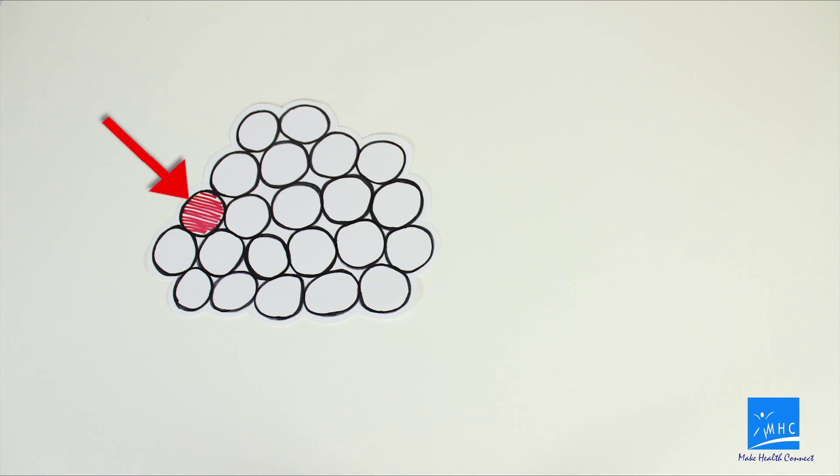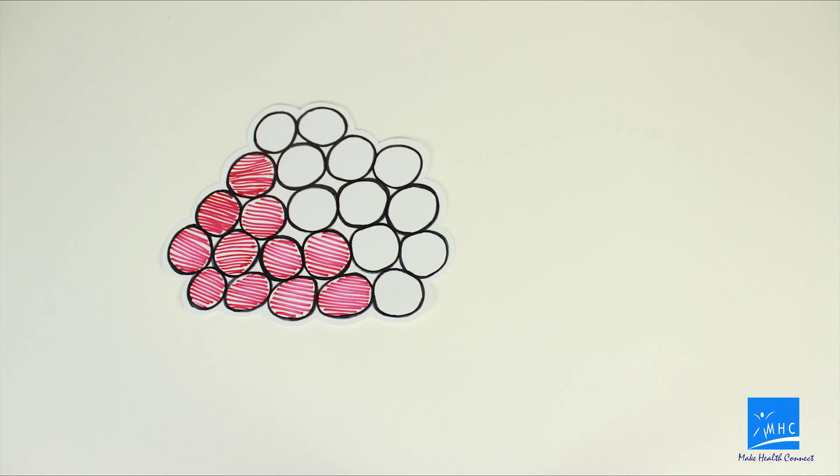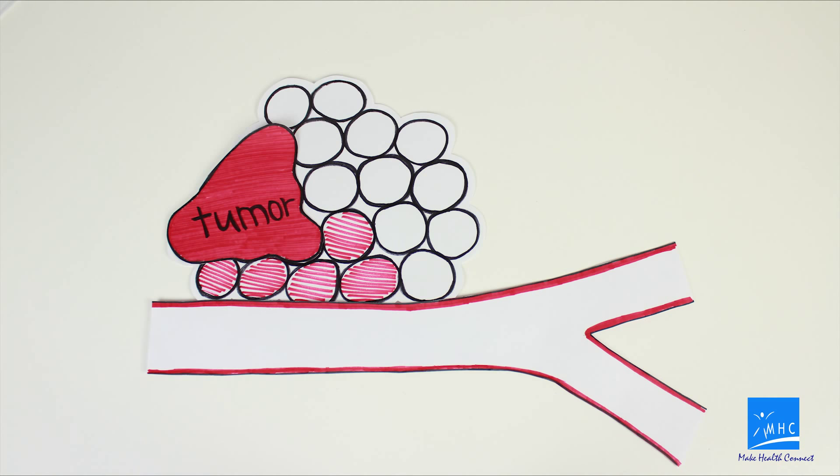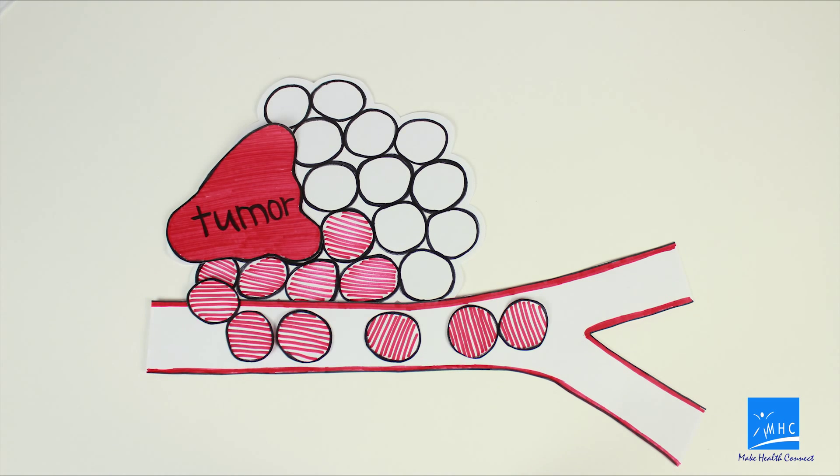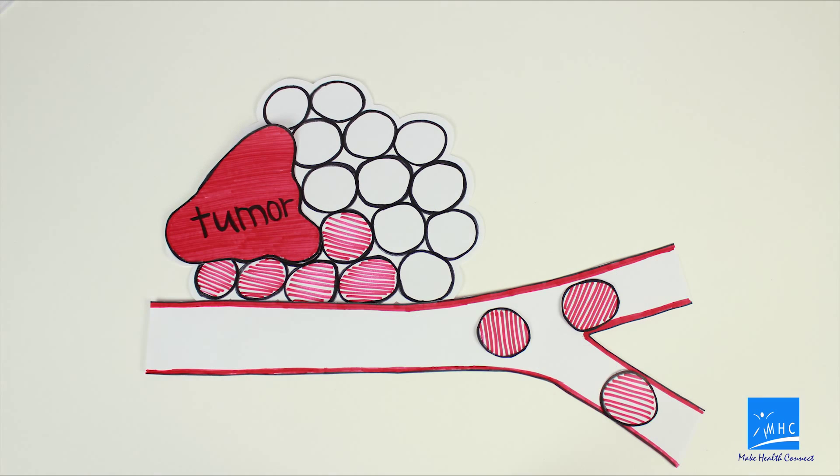This cell will function abnormally and will grow uncontrollably. As cancer develops, tumors may form and at a later stage, cancer cells can enter the bloodstream and get relocated to other parts of the body, leading to the spread of cancer in the body.